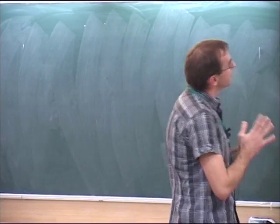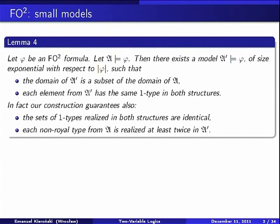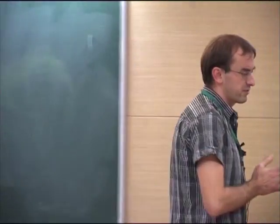This construction guarantees some additional properties: the set of one-types realized in both structures are identical. All the types realized in the original structure are also realized in this new small model. And each non-royal type — recall that a type is royal if it is realized in a structure exactly once — from the original structure is realized in the new structure at least twice.